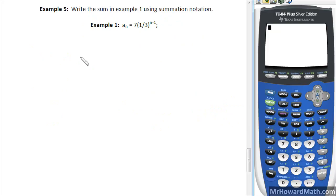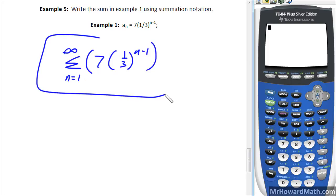Put our sigma symbol, we're using n here, so n equals 1 to infinity, and our rule is 7 times (1/3)^(n-1), and that would be the answer for example 5. We're just using the sigma notation there. And that's it for example 5, and that's it for this video.